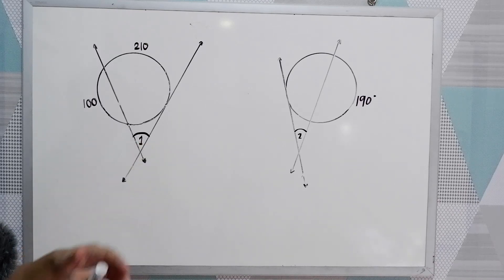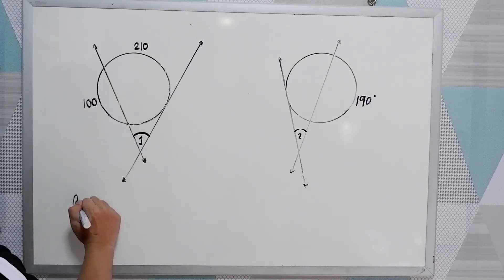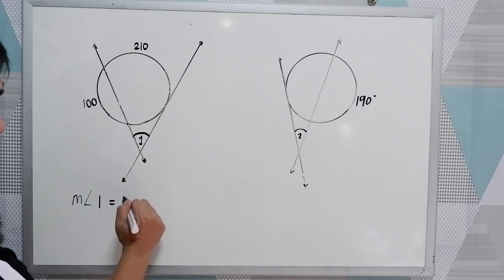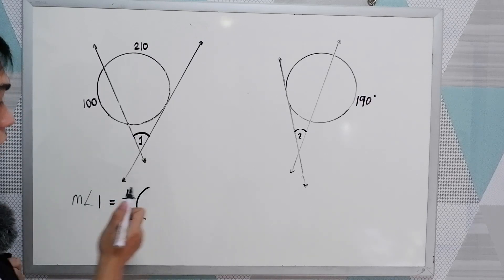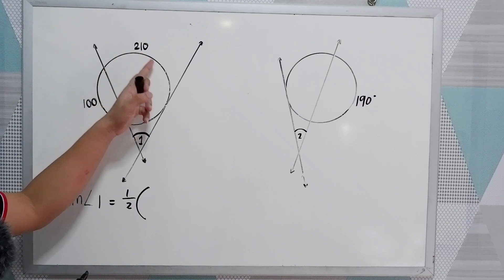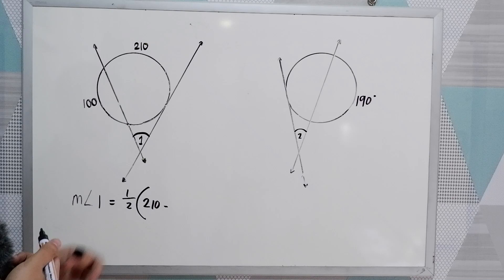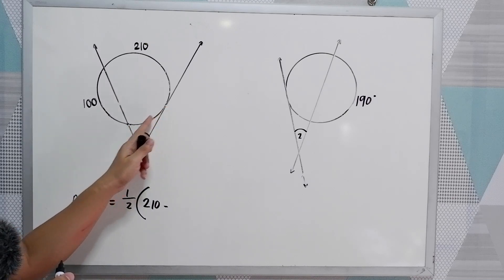So let's try to solve first angle 1. So the measure of angle 1, the exterior angle. So one-half of the difference of the intercepted arcs. We have 210 minus, we're going to find the measure of this arc.